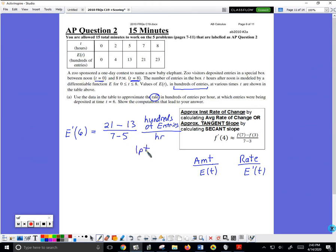Just to hopefully make sense of this, to make it easier to remember on future FRQs, this is really eight over two, which is four or 400 entries per hour.